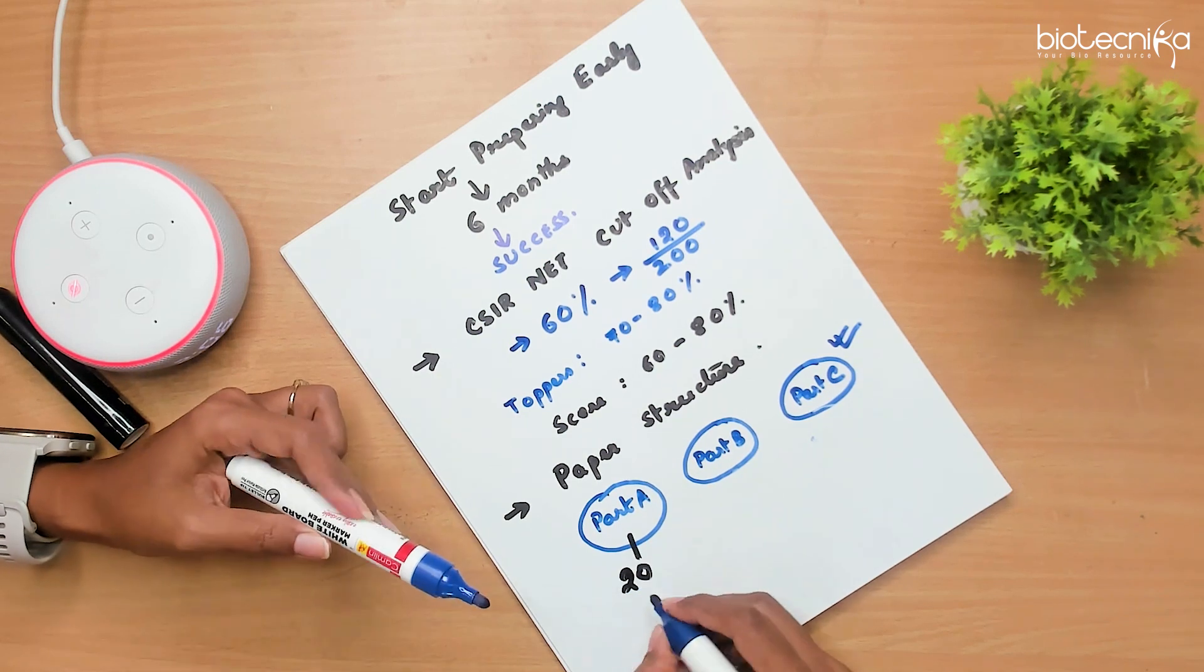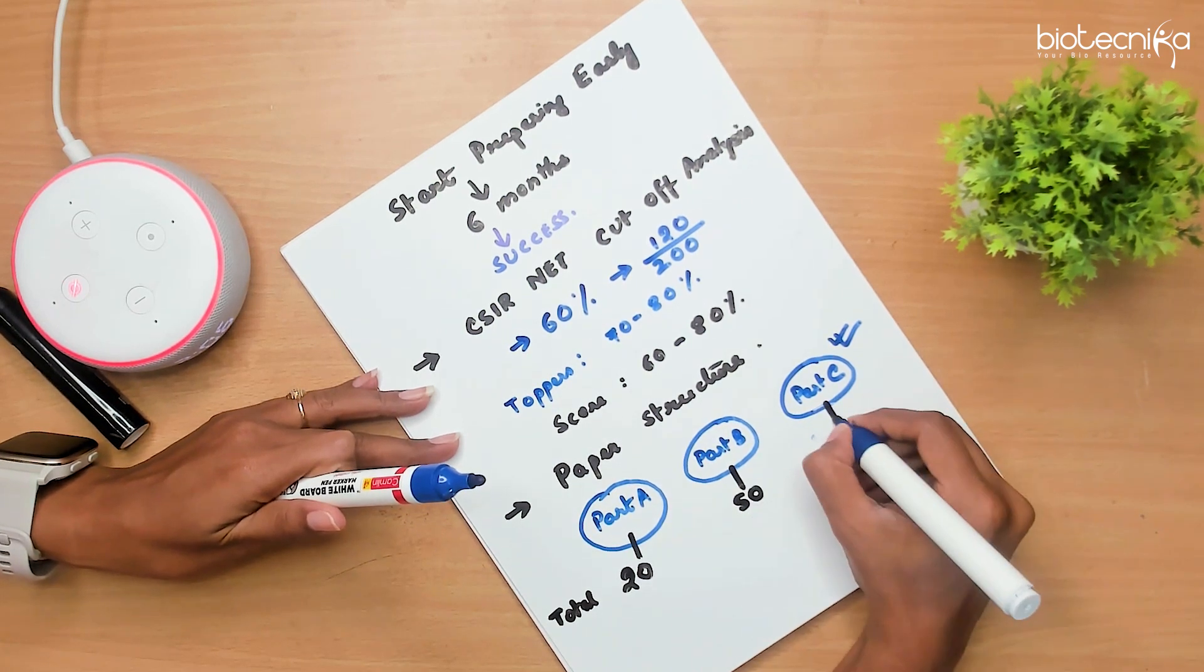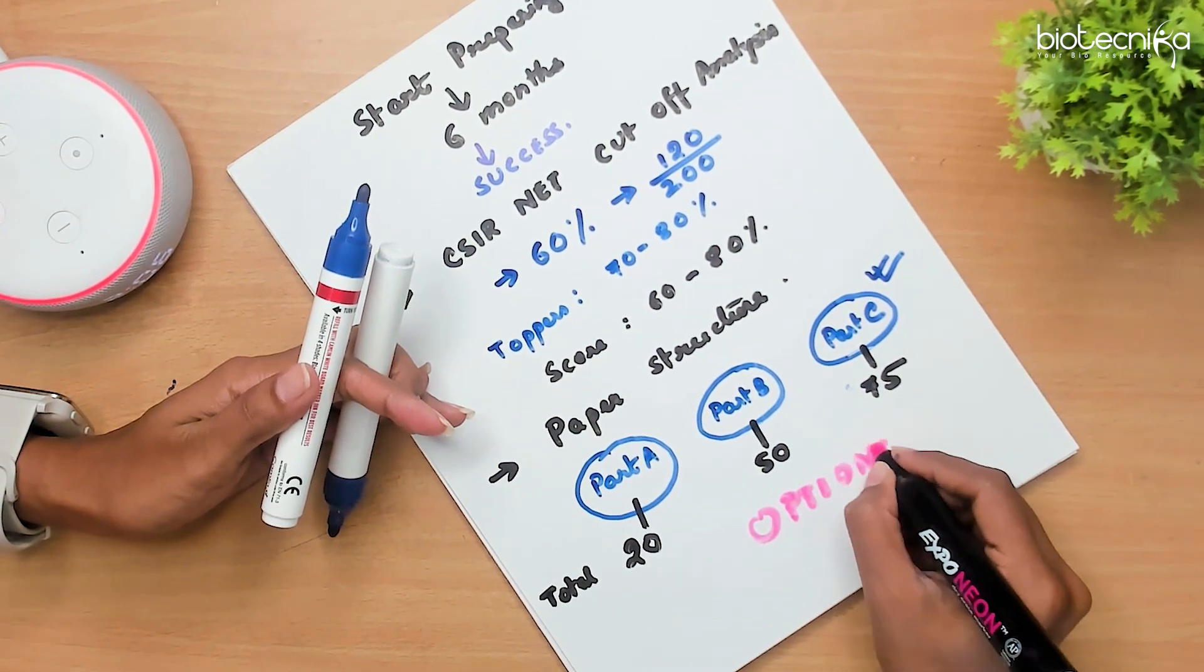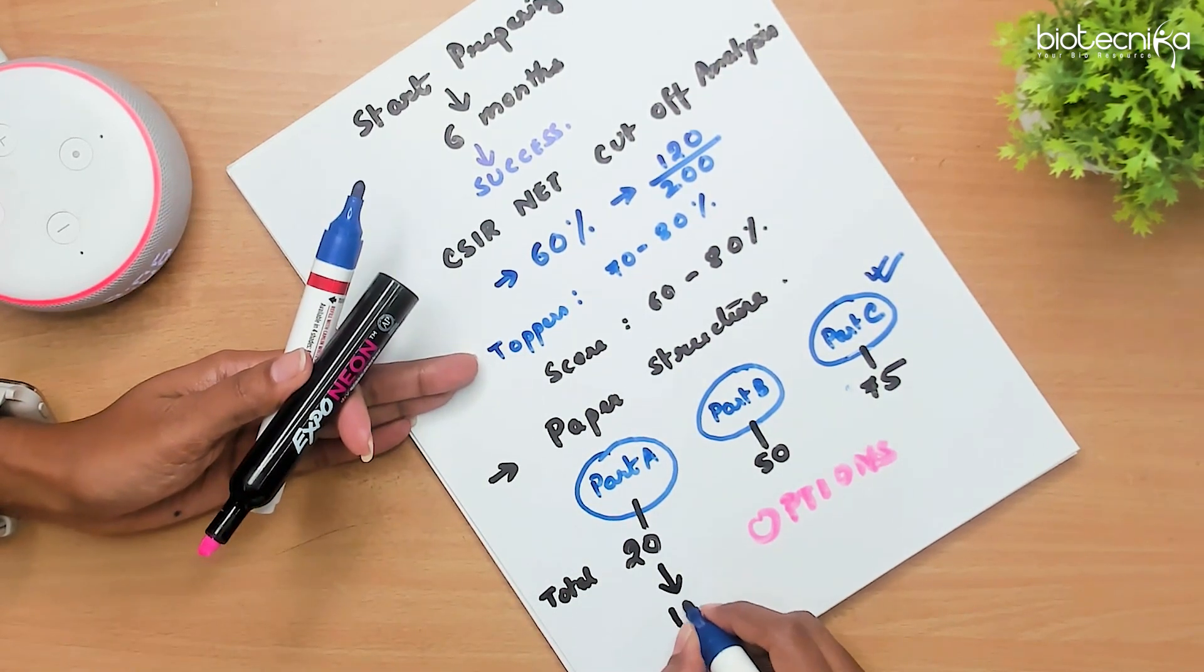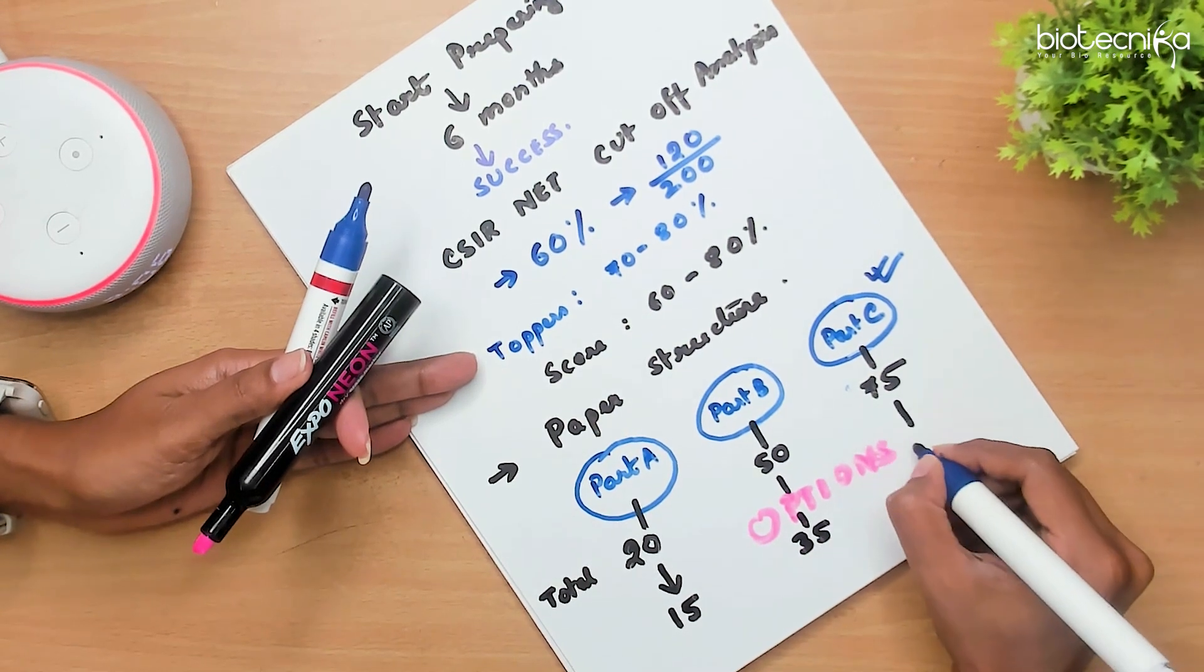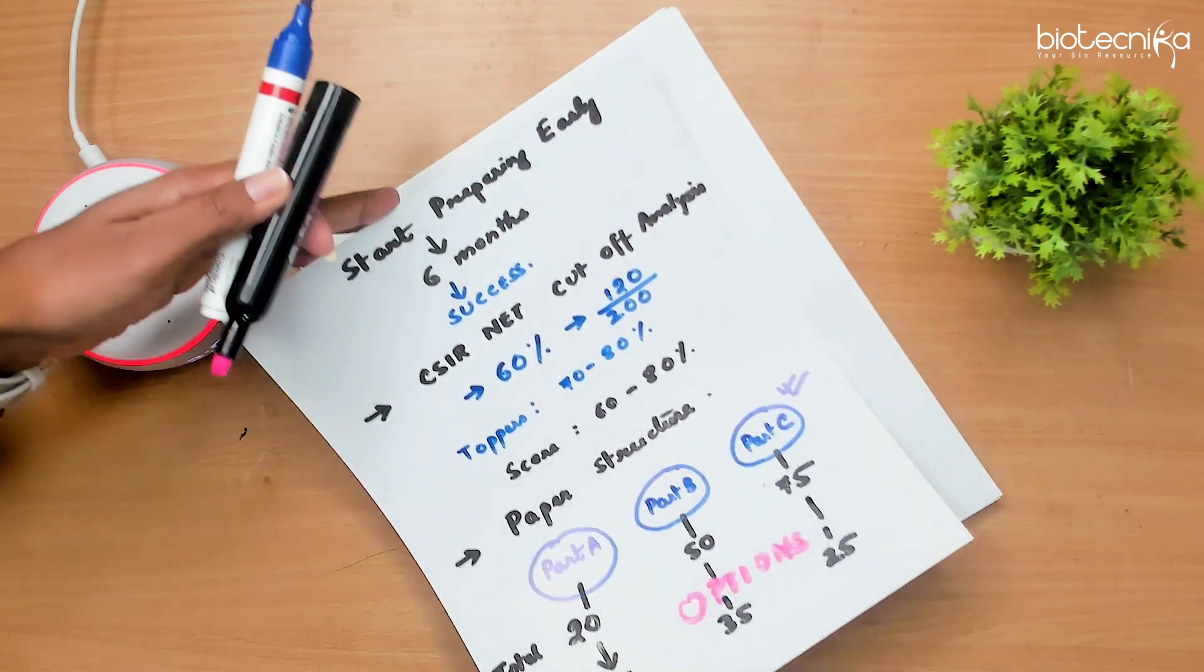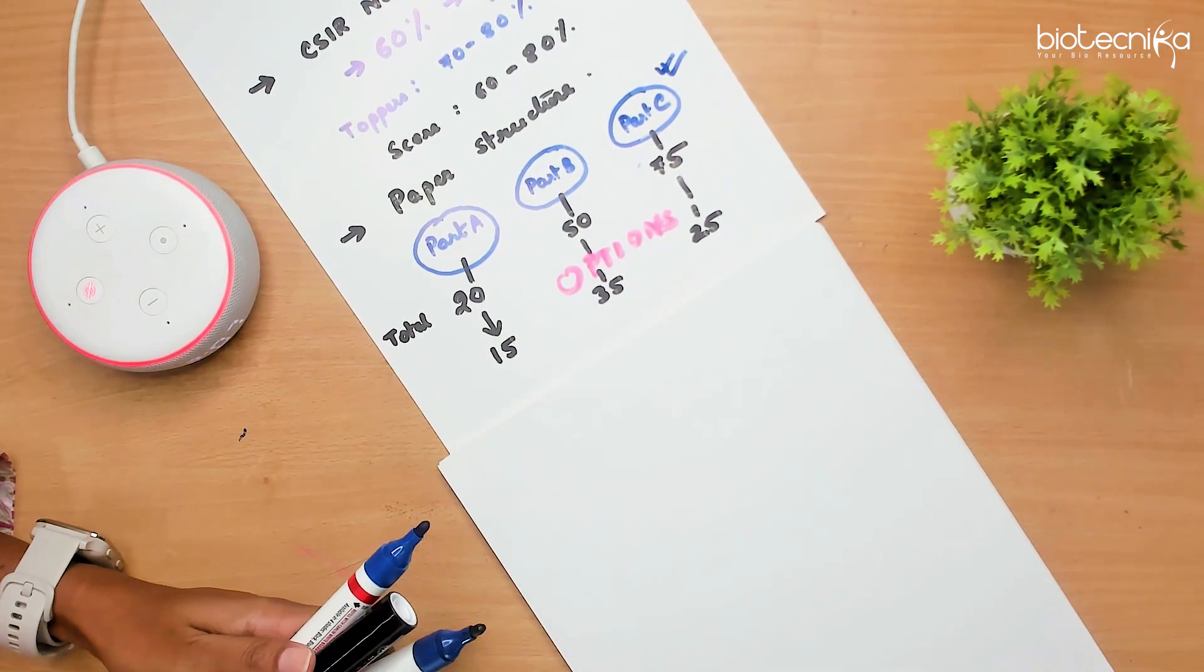Let's look at how many questions you get per section. In Part A, total questions you get is 20. In Part B, total questions are 75. But what is the best part of CSIR NET? Options. You get lot of options in the question paper. So, out of 20, you don't have to attend all of them. You just have to attend 15 questions. Out of 50, you only have to attempt 35 questions. And out of 75, you only have to attempt 25 questions. Now, let me show you a way how you can attend a specific set of questions so that you can clear this exam. I will keep this for your record so that you understand how the division is going to be.